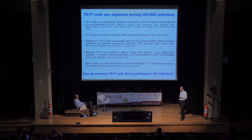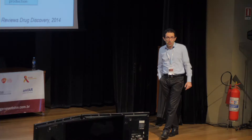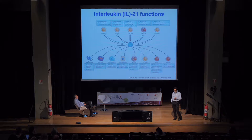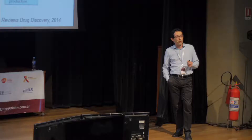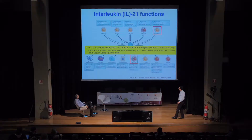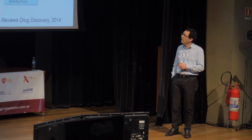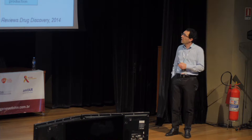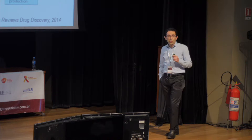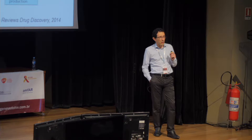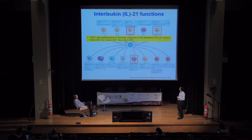Th17 cells are important for gut integrity and reducing inflammation. We asked whether we could preserve Th17 cells in the pathogenic model. We focused on IL-21, a cytokine mainly produced by CD4 T cells and NKT cells. IL-21 is important for CD8 and NK cell function and has been evaluated in clinical trials for multiple myeloma and renal cell carcinoma. Most importantly for us, IL-21 is critical for the differentiation and survival of Th17 cells — in its absence, generation and maintenance of Th17 cells is compromised.